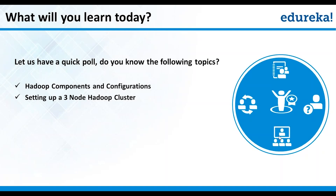A lightweight Hadoop distribution — open source Apache is the most lightweight distribution right now. The reason we chose open source is it will tell you exactly what are the configuration files that need to be changed and what changes get impacted where. The default block size in Hadoop 2.7.1 is 128 MB. In Hadoop 1, you typically talk about 64 MB. In Hadoop 2, irrespective of version, it is 128 MB.